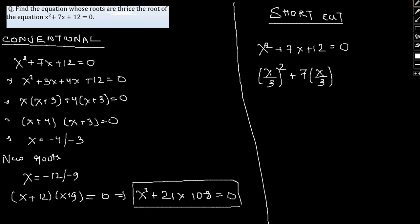So we have (x/3)² + 7(x/3) + 12 = 0. This would come out to be x²/9 + 7x/3 + 12 = 0. Let me multiply the entire equation by 9. So we'll have x² + 21x + 108 = 0, which is our answer.